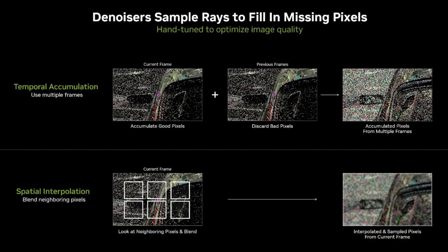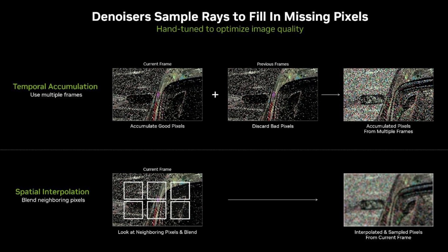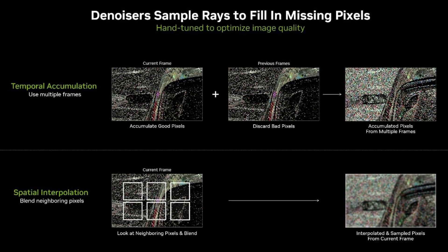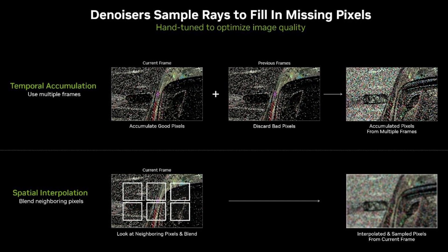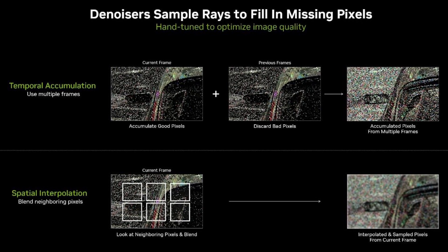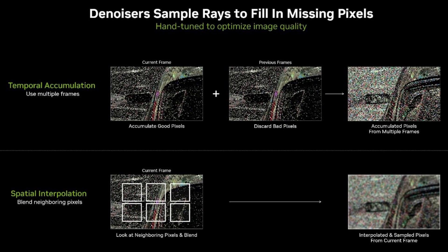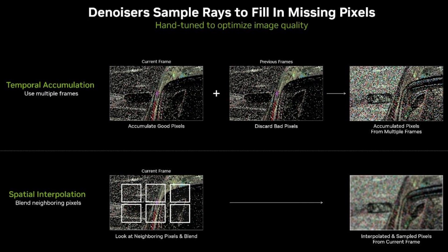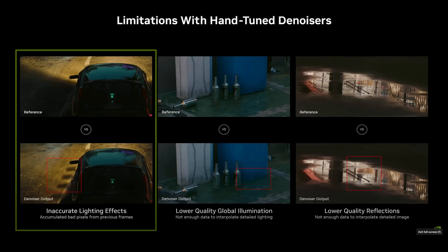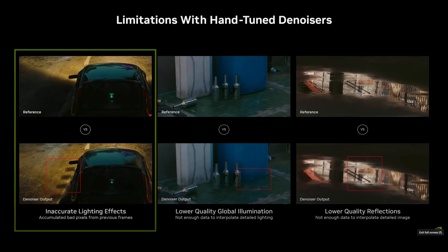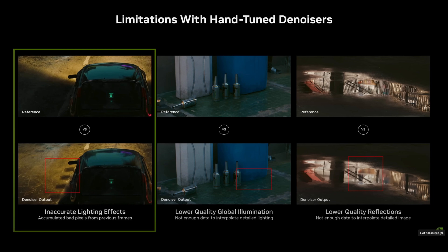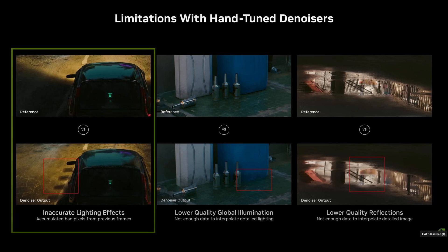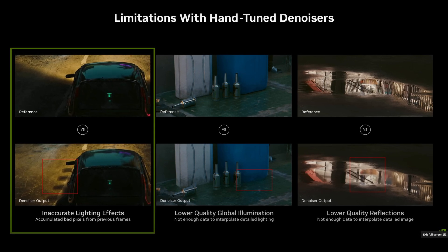The temporal method uses multiple frames to calculate what's needed to fill in these gaps. Spatial fills in the gaps by blending close by pixels. As you all know, these methods can be problematic and sometimes introduce ugly artifacts or ghosting.